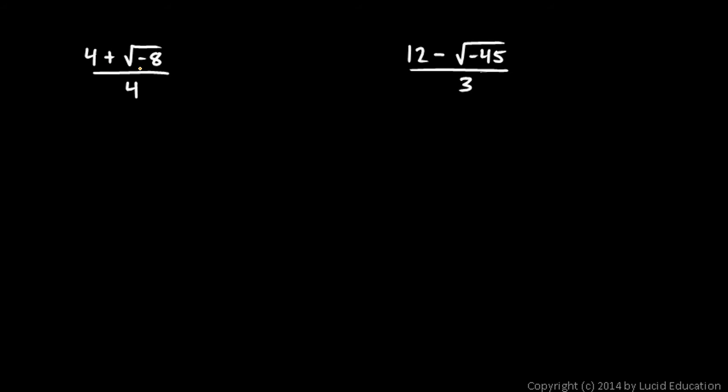Okay, the first one, 4 plus the square root of negative 8 over 4. Now when you simplify this, do not just cancel those 4s. That would be an error. If this were 4 times the square root of negative 8, then you could cancel those 4s, but those 4s do not cancel. Here's how you need to simplify this.